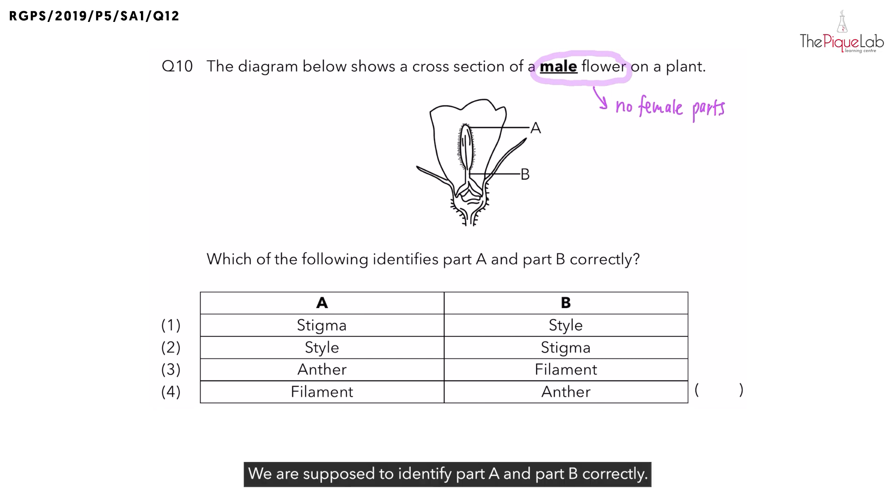We are supposed to identify part A and part B correctly. So if we quickly scan through the options, which are the parts we will definitely not find in this flower? We should not find the stigma and the style. Why is that so? The stigma and style are female parts and will not be found in the male flower. So we are only left with option 3 and option 4.